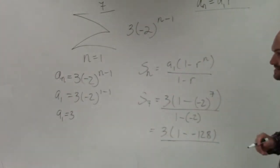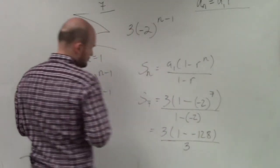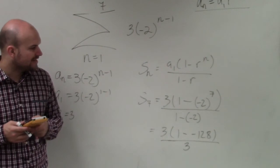So if you do negative 2 raised to the seventh power, you're going to have negative 128. And then 1 minus negative 2 is going to give you a 3.